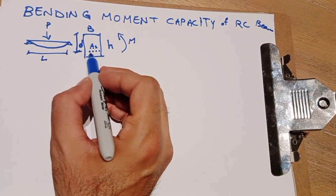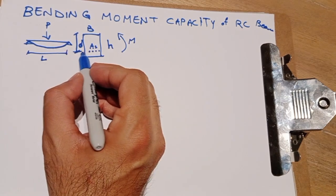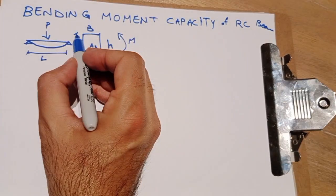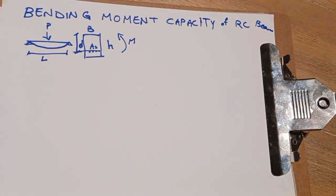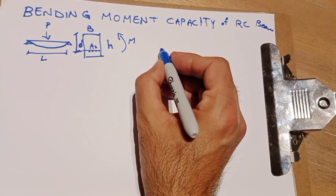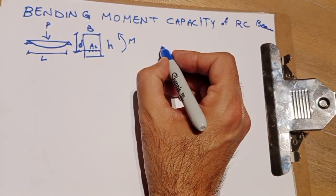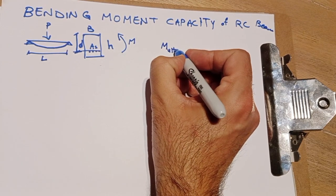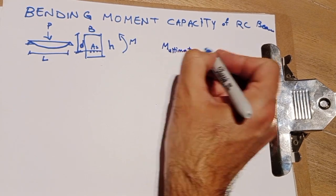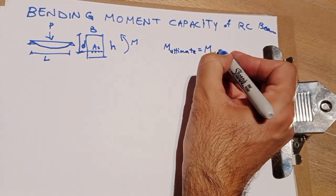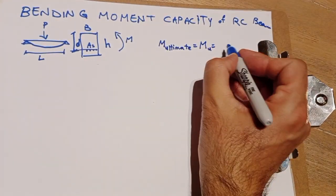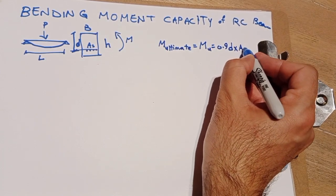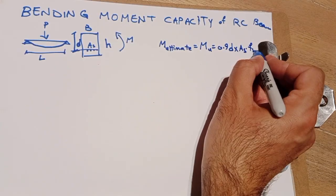And the distance between the middle level of the area of reinforcement to the top layer is d. Very simple way to calculate M ultimate or what we say Mu is 0.9 d times As times fsy.